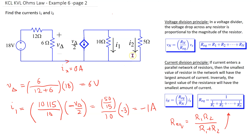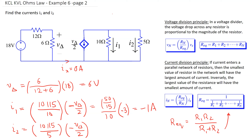Similarly, we can write an expression for i2 directly. i2 = [10∥5 / 5] × (−v_delta/2). Substituting the values: (50/15) / 5 × (−3) = −2 amp, confirming the earlier solution. This confirms that the voltage and current division approach gives the same results as the first-principles KVL/KCL method.